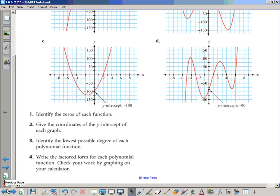Identify the zeros of each function, so we're going to find all of their x-intercepts. Give the coordinates of the y-intercept of each graph. Number three, identify the lowest possible degree of each polynomial function, and I'll tell you how we do that. And then finally, write the factored form for each polynomial function. That's going to take a little bit of work, and then we're going to check that on our graphing calculator.